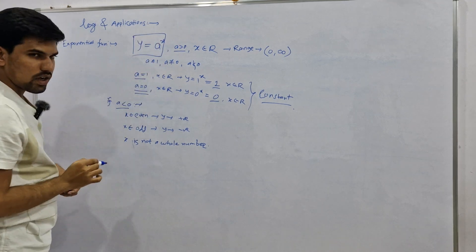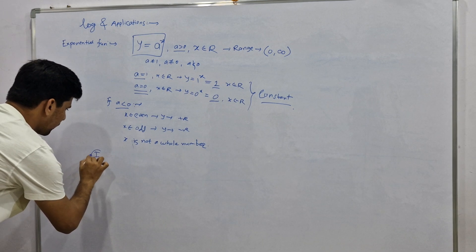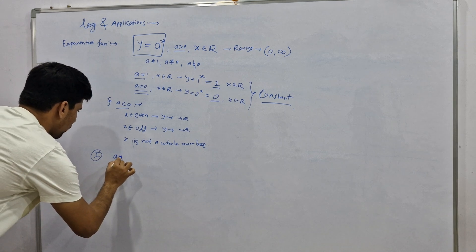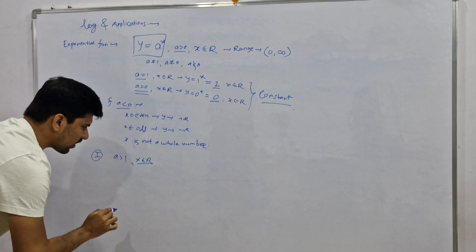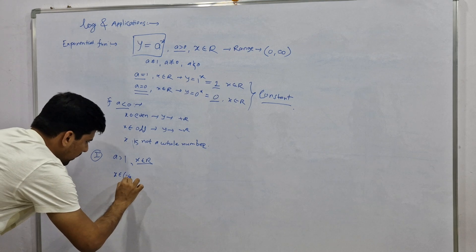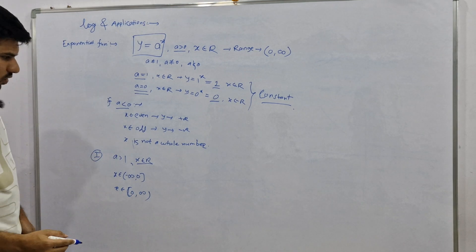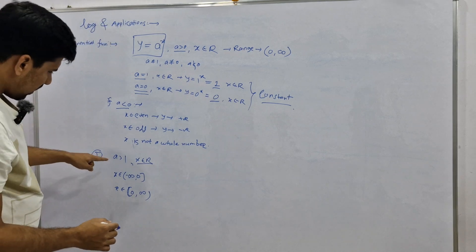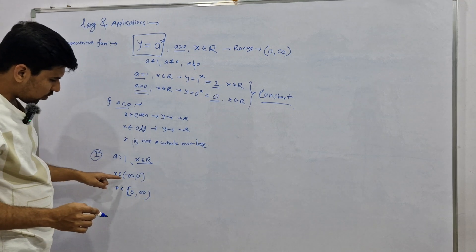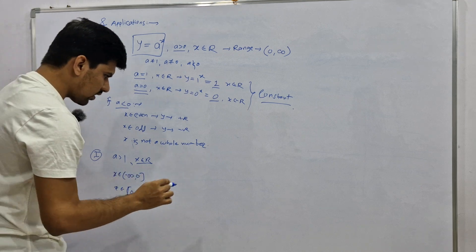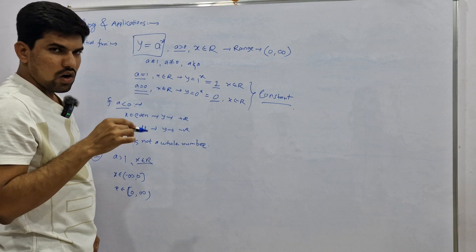So our function is y equal to a to the power x. Now we are going to see the graph of the exponential function. There are two cases. The first case is a greater than one, with x belonging to R. We split the range into two parts: x belongs to minus infinity to zero, and x belongs to zero to infinity. When a is greater than one and x goes to minus infinity, our value will be one upon a to the power infinity, which gives one upon infinity, which equals zero.